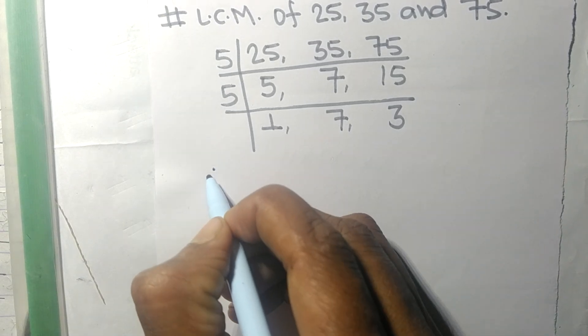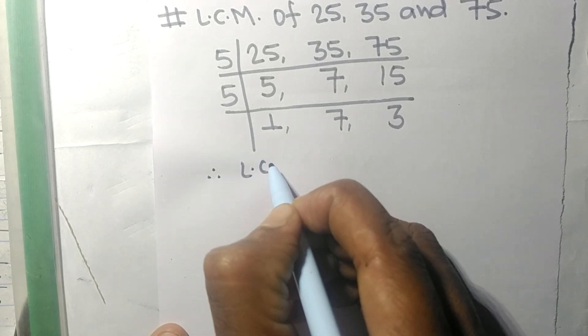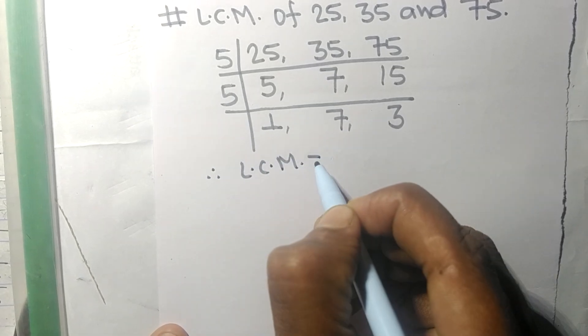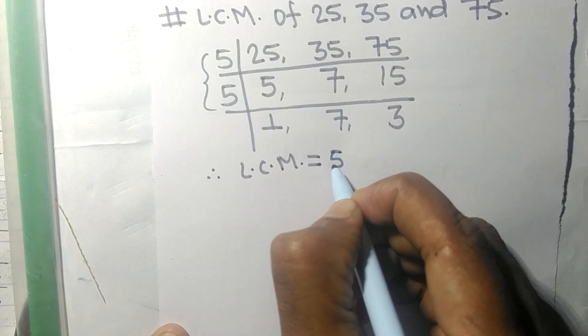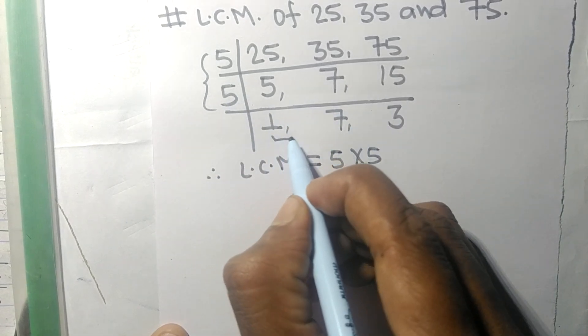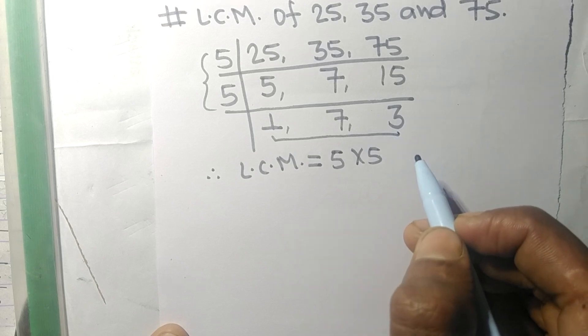Therefore, the LCM is equal to, from this side it is 5 times 5, and from this side we choose the numbers greater than 1.